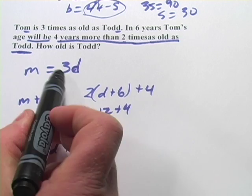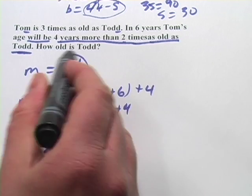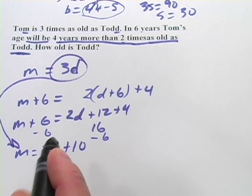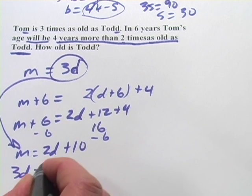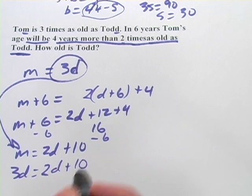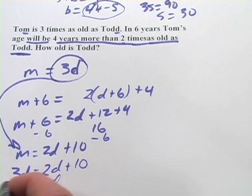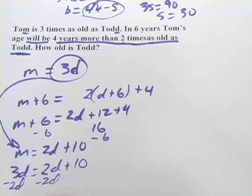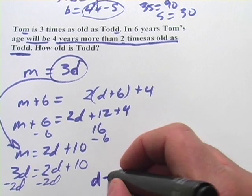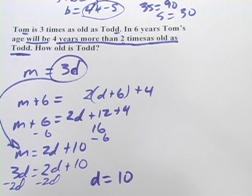And then we have this M over here. So I can actually substitute this in for M. So we'd have 3D equals 2D plus 10. Subtract 2D from both sides. And we simply get D equals 10. So Todd is, right now, 10 years old. So that's a little bit of work with age problems.